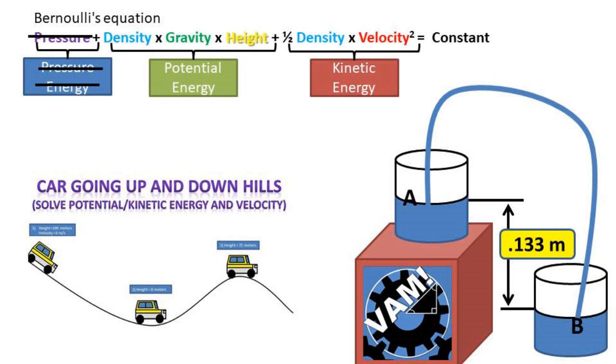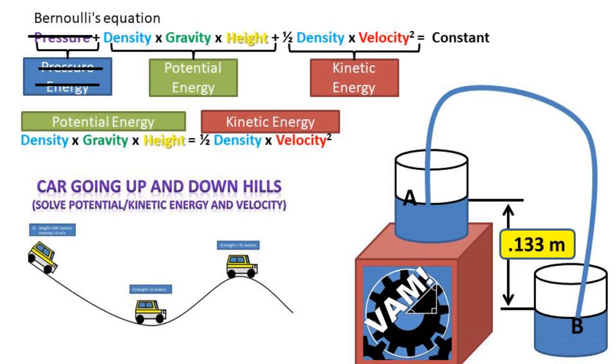See my car going up and down hills video. Being there is a height decrease, we can convert potential energy at point A to kinetic energy at point B. This means that we can set potential energy equal to kinetic energy.